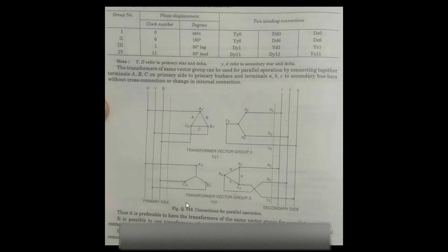Step Up Step Down Transformers. You will see on the screen the four groups: first, second, third, and fourth. These are phase displacement, also mentioned as 0, 180 degrees, 30 degree lag, and 30 degree lead. These are two winding connections of the transformers: star-star 0, delta-delta 0, and delta-zigzag 0. These are the first group.